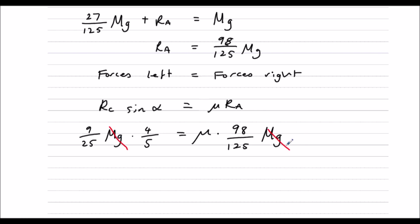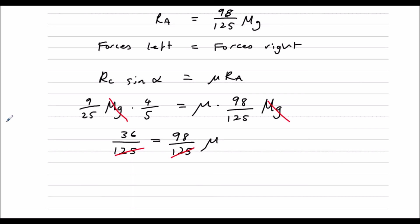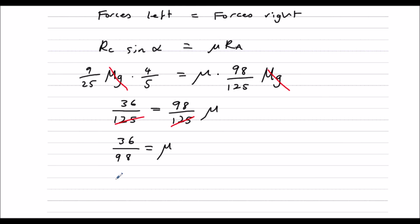So let's divide both sides by mg. Let's get rid of that. And then, let's multiply these together first. So nine times four is 36. Twenty-five times five is 125. So 36 over 125 equals 98 over 125 times mu. Multiply both sides by 125 and then divide by 98. So we get 36 over 98 is mu. Or we could half them both. 18 over 49 is mu.